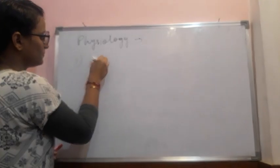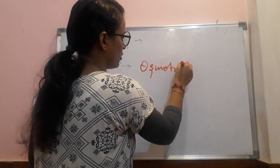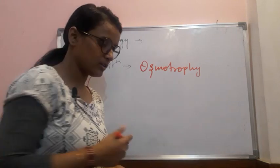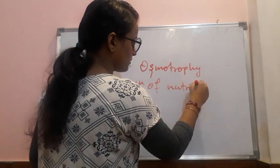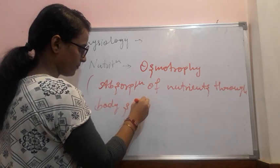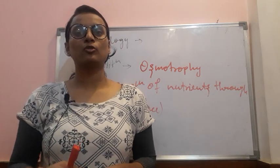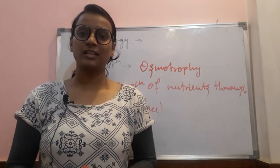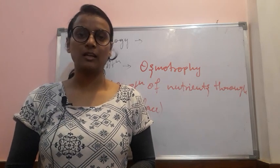Next is a little physiology — nutrition or intake. The mode is osmotrophy, which means absorption of nutrients through the body surface. We also need to discuss reproduction, which has two types — asexual and sexual — but we will discuss this in the next video. Please comment, like, subscribe, and share. Thank you so much.